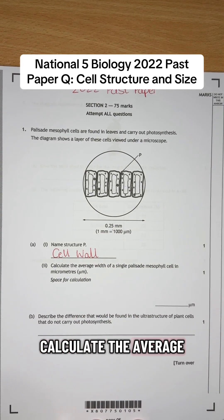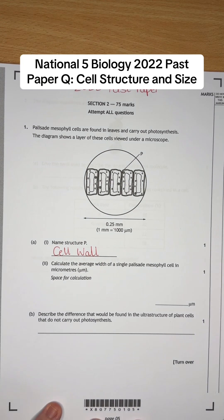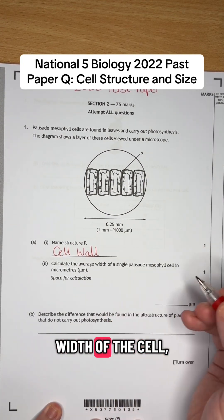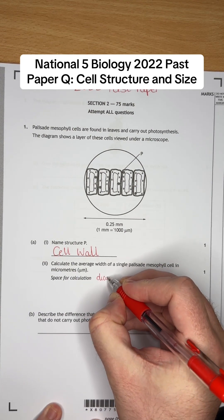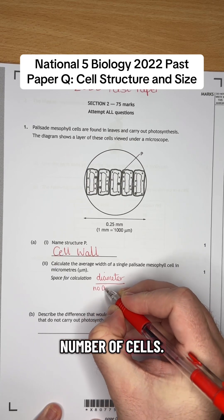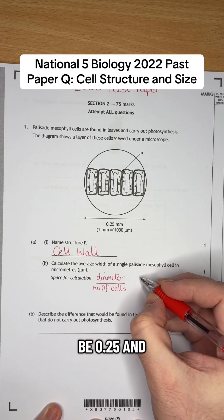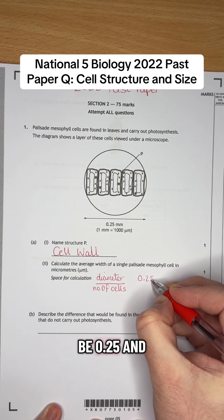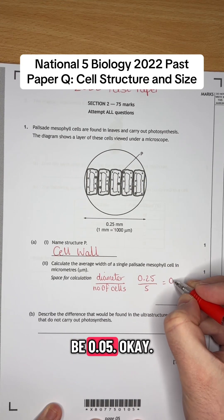Number two, calculate the average width of a single palisade mesophyll cell in micrometers. So if we're calculating the width of the cell, we have to do the diameter divided by the number of cells. So the diameter is going to be 0.25 divided by 5. So it's going to be 0.05.